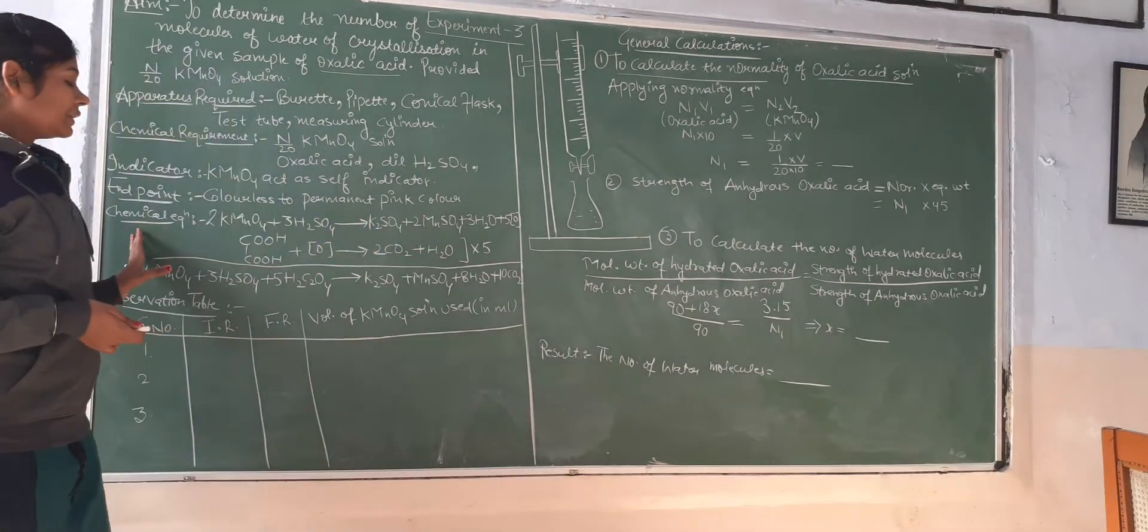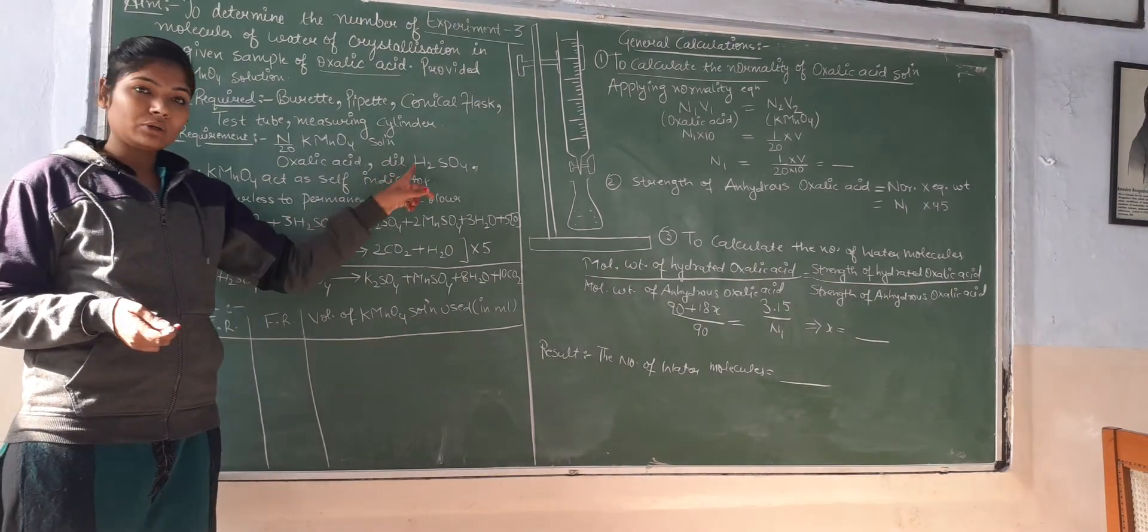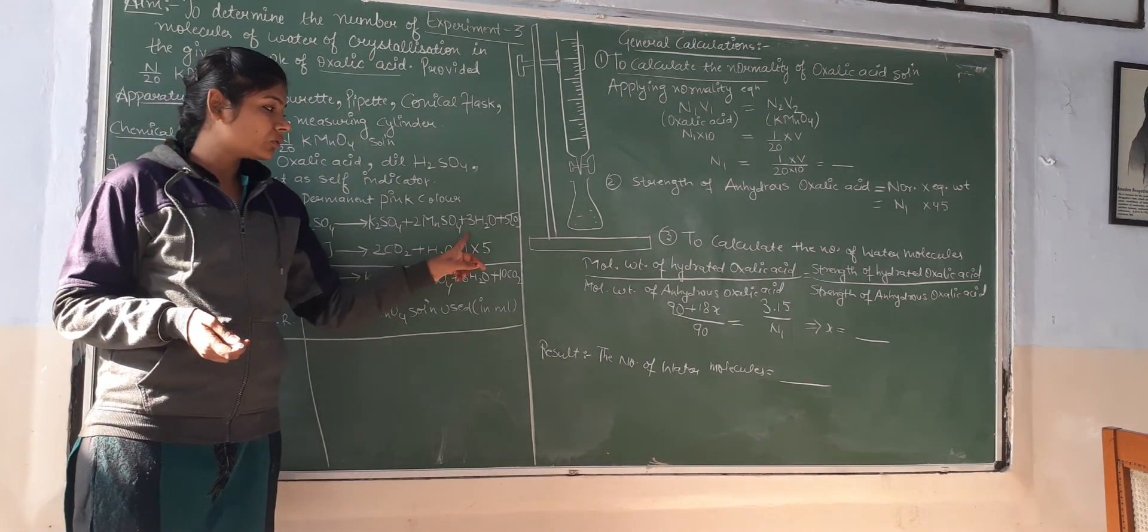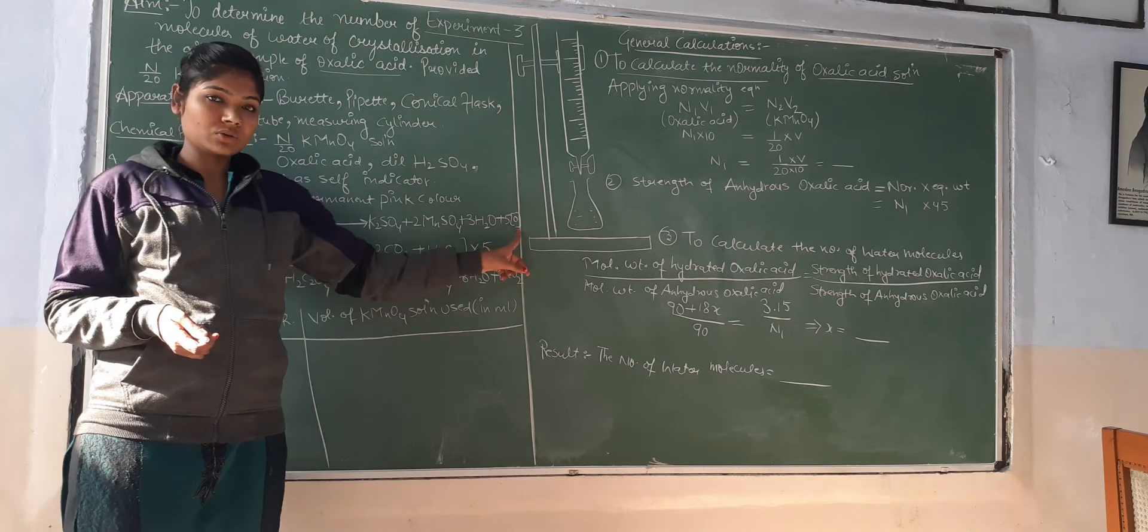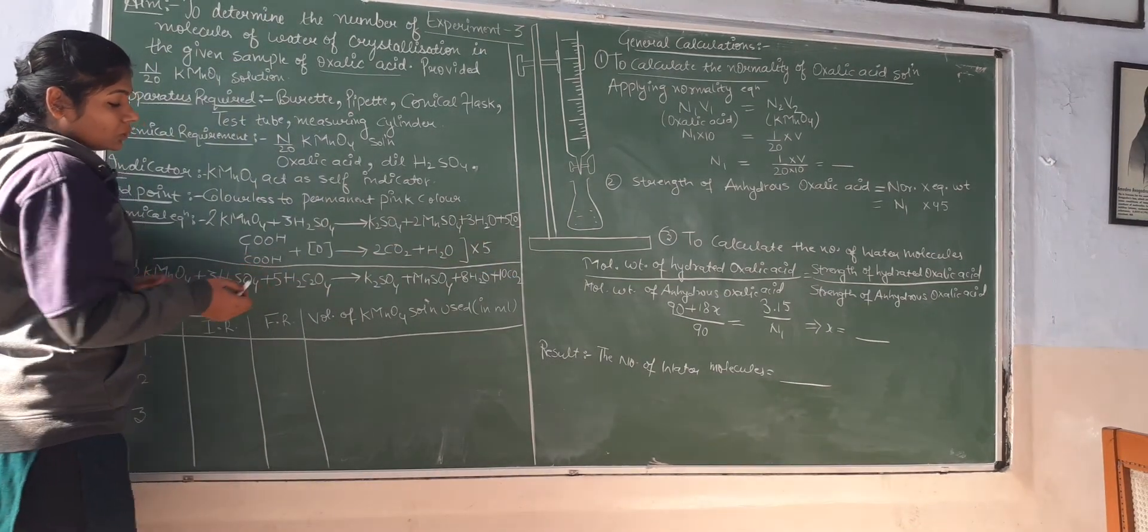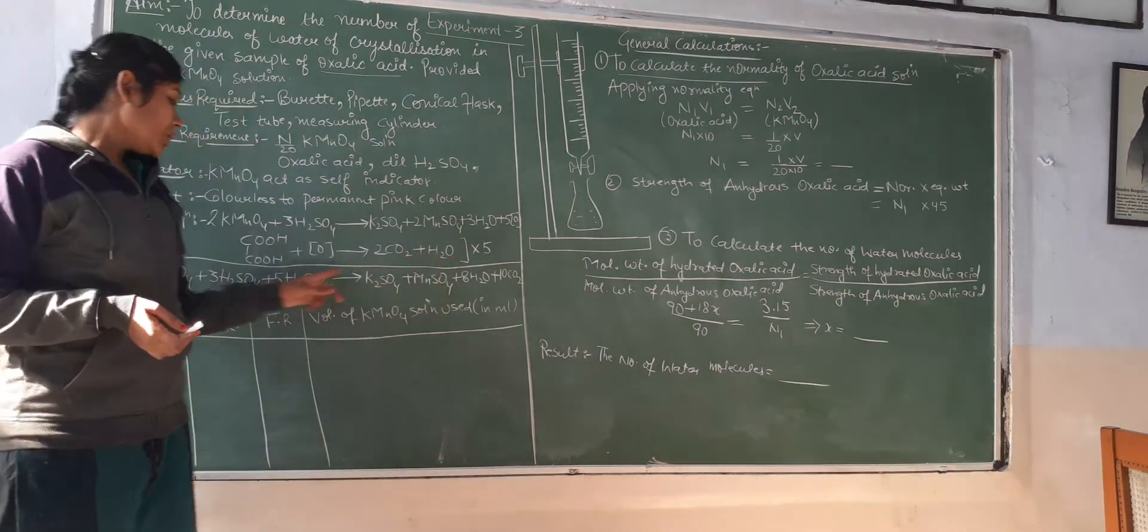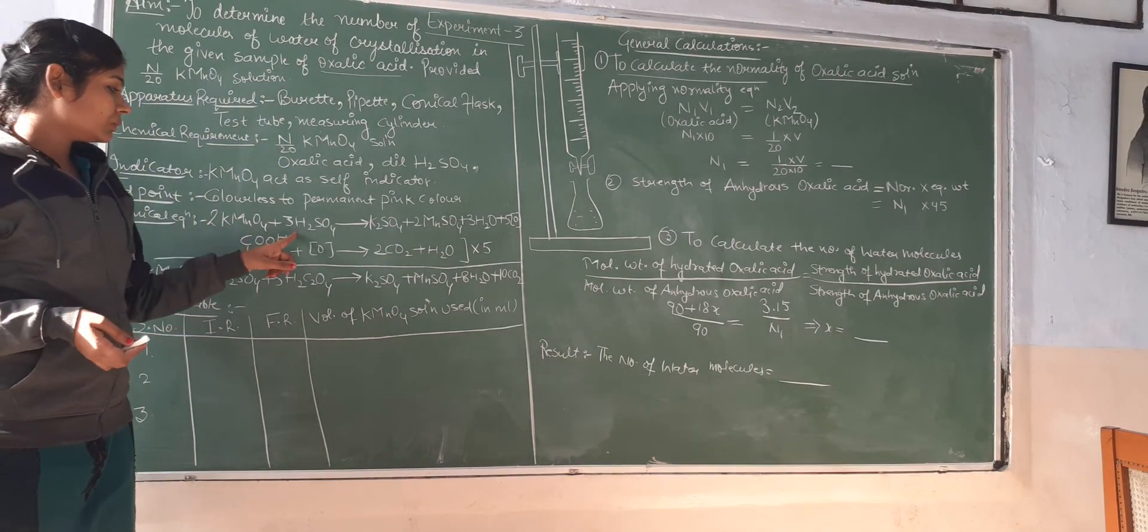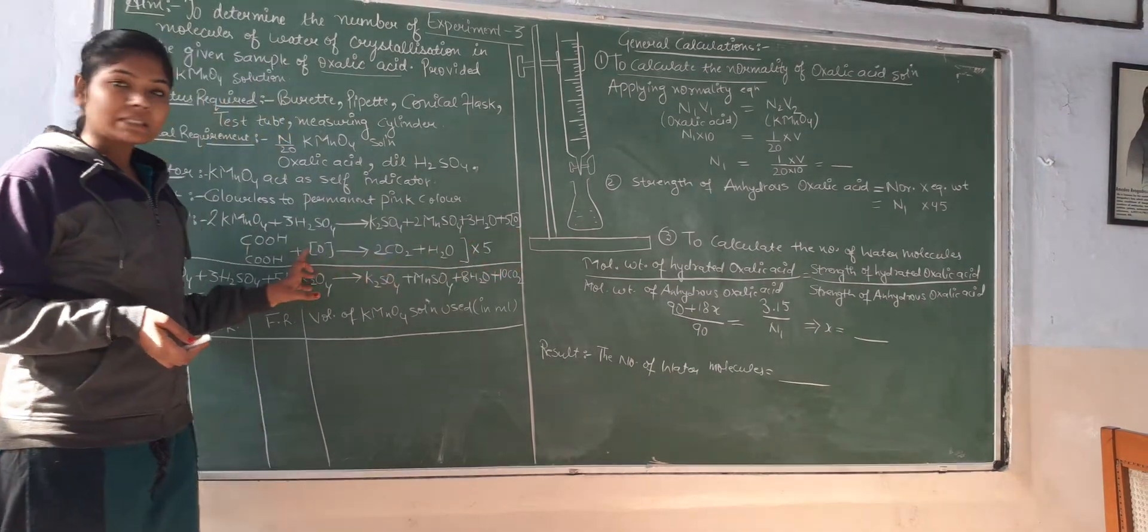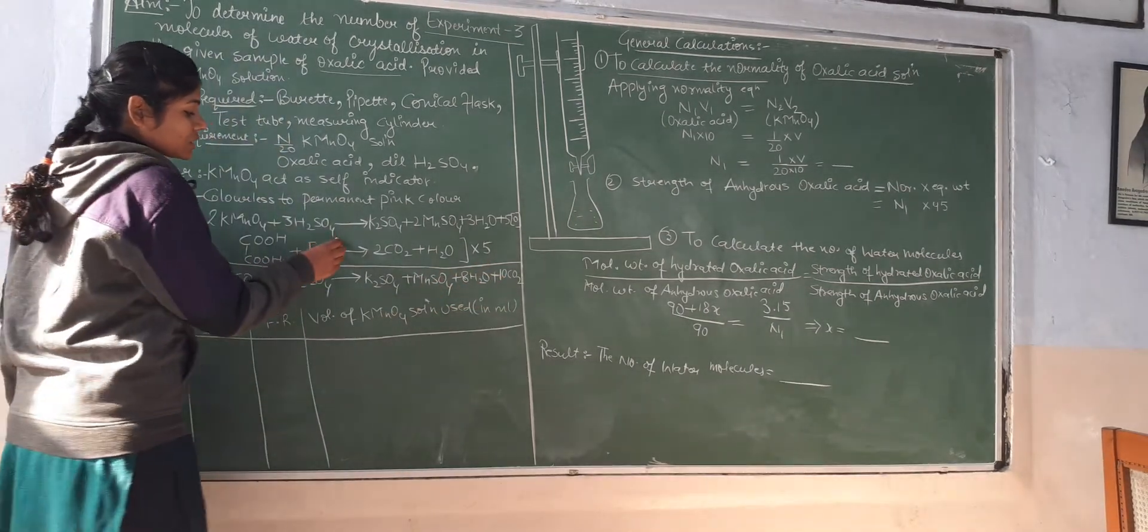Now the chemical equation. KMnO4 solution plus H2SO4 solution is added. Overall, for oxalic acid, it will be 2 KMnO4 plus 3 H2SO4. Here oxalic acid is involved, so we will multiply by 5.